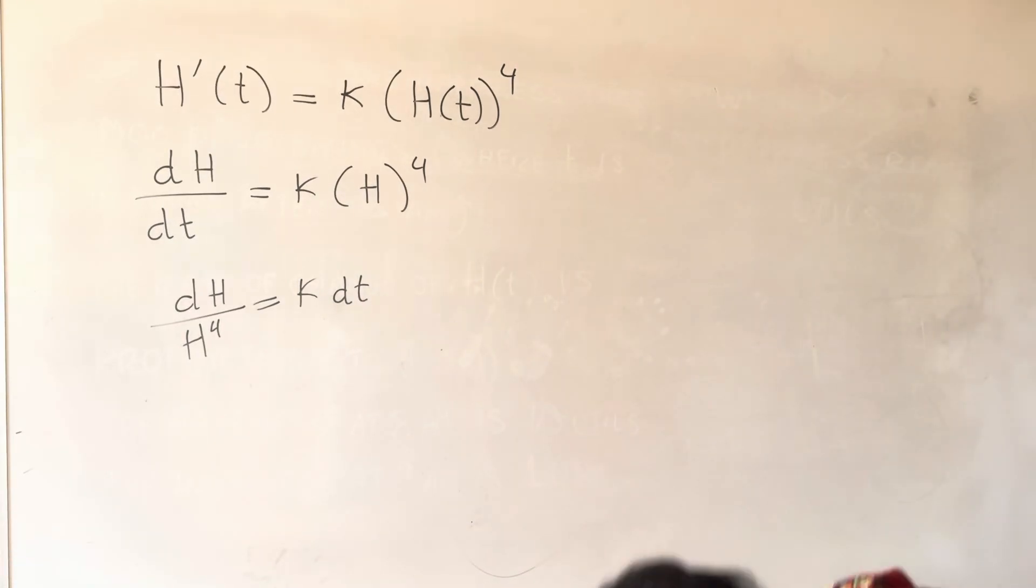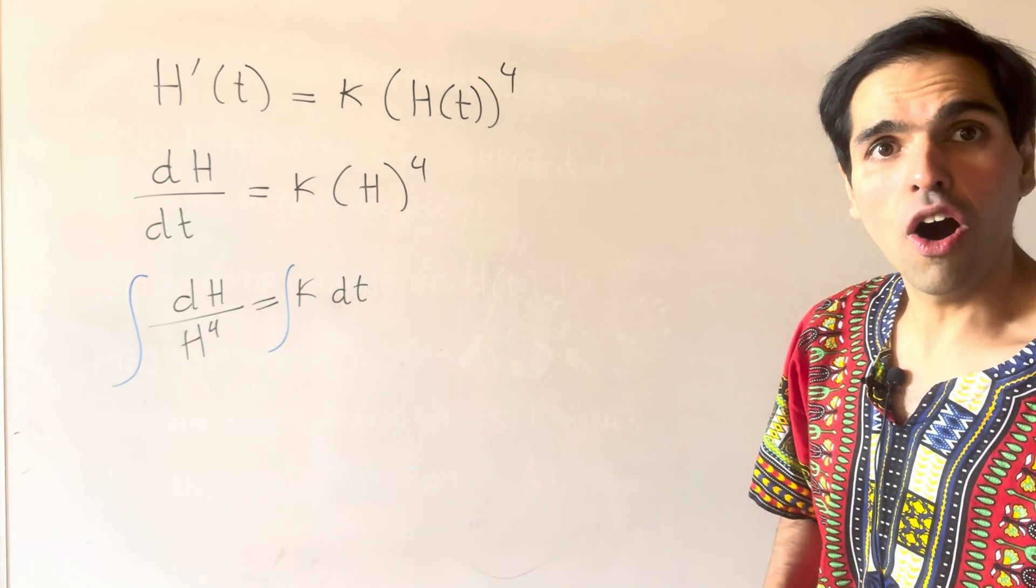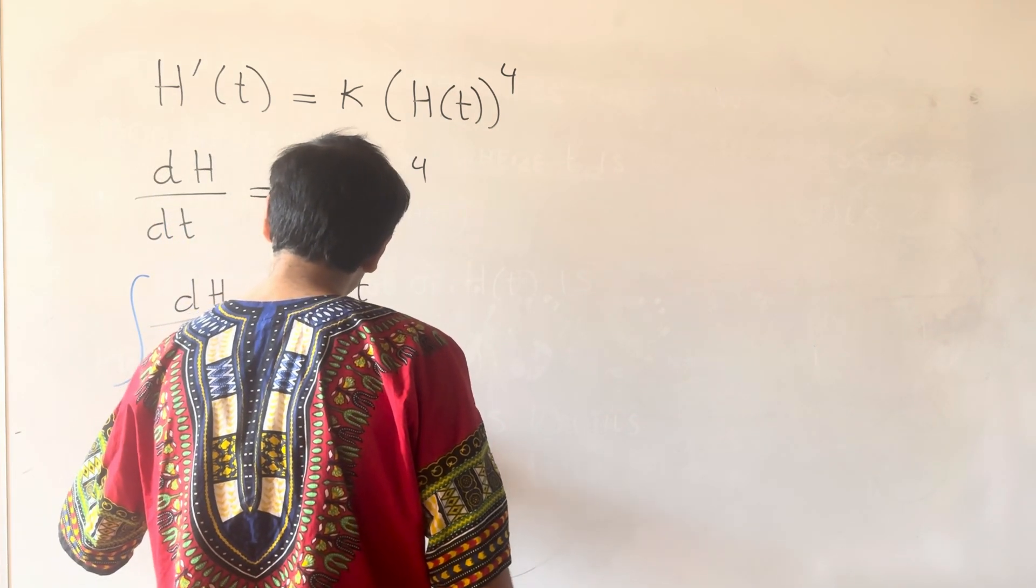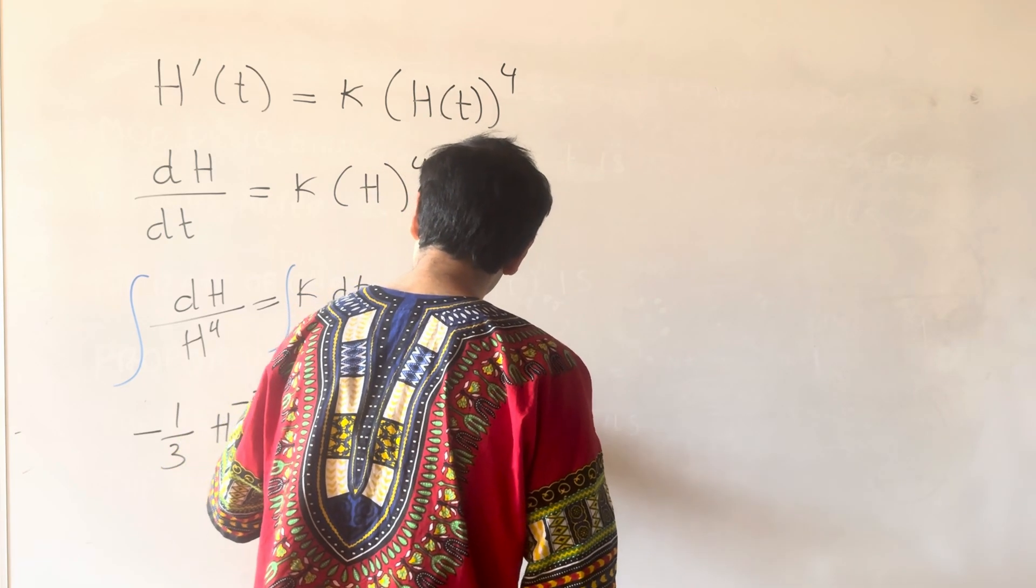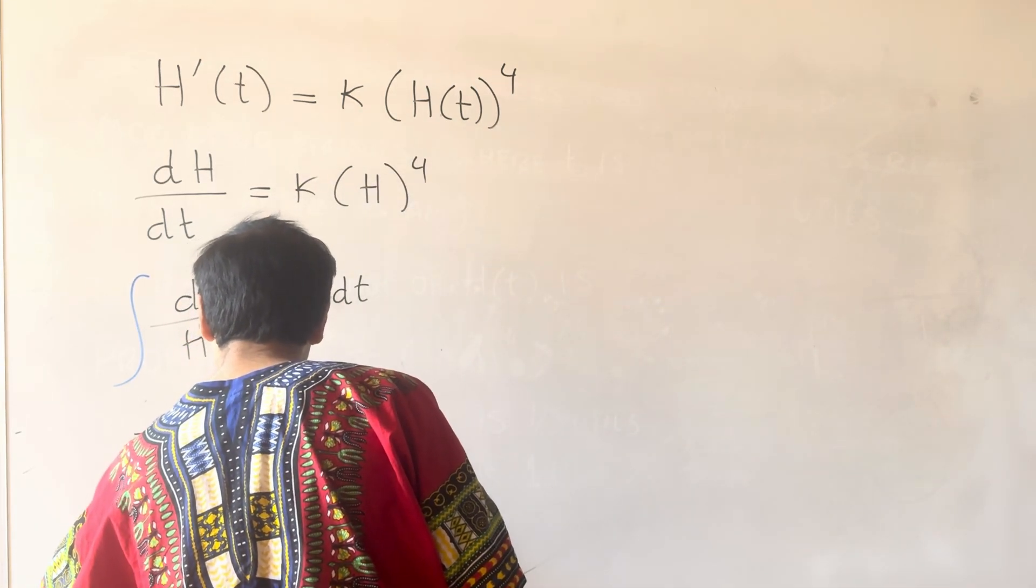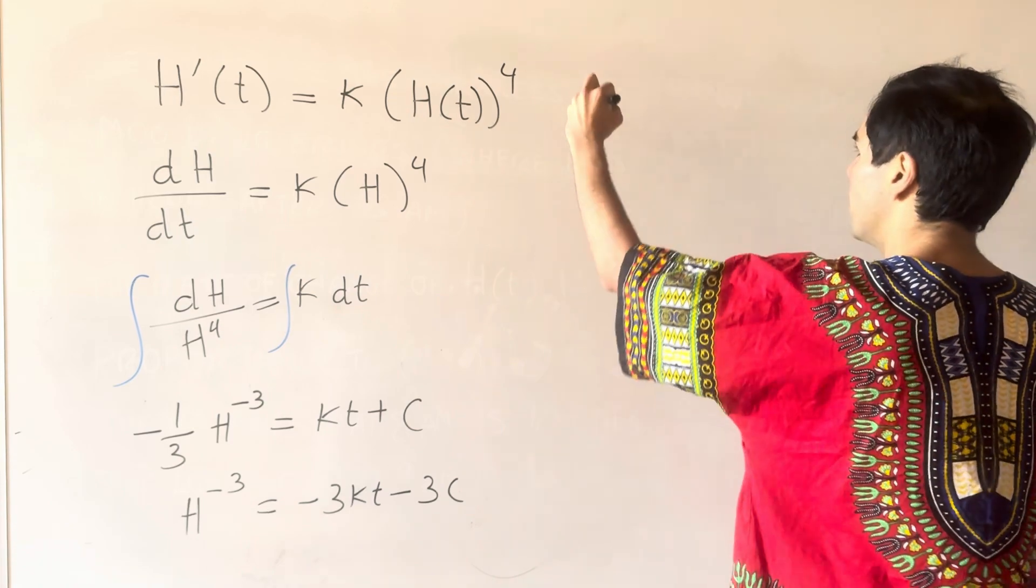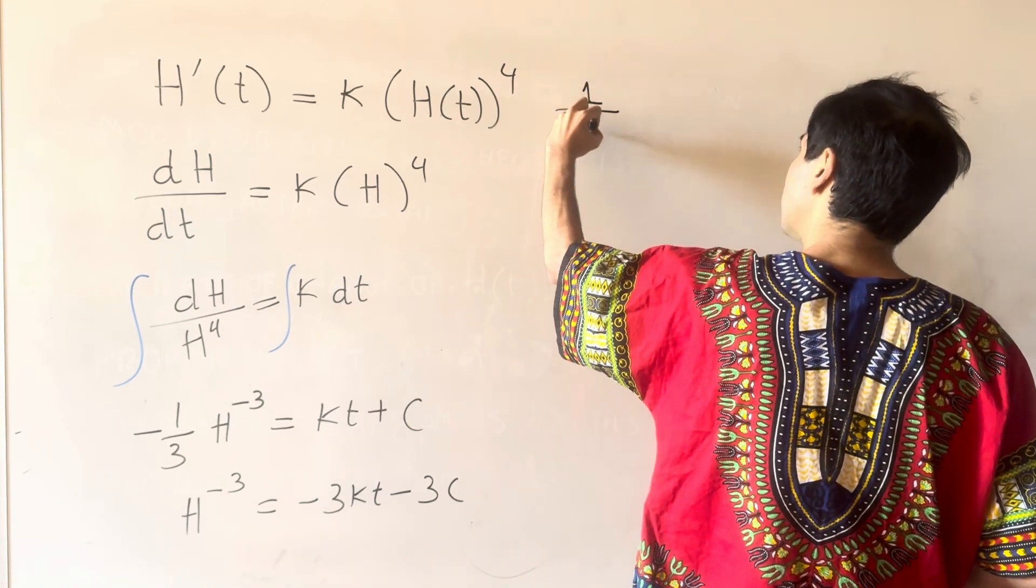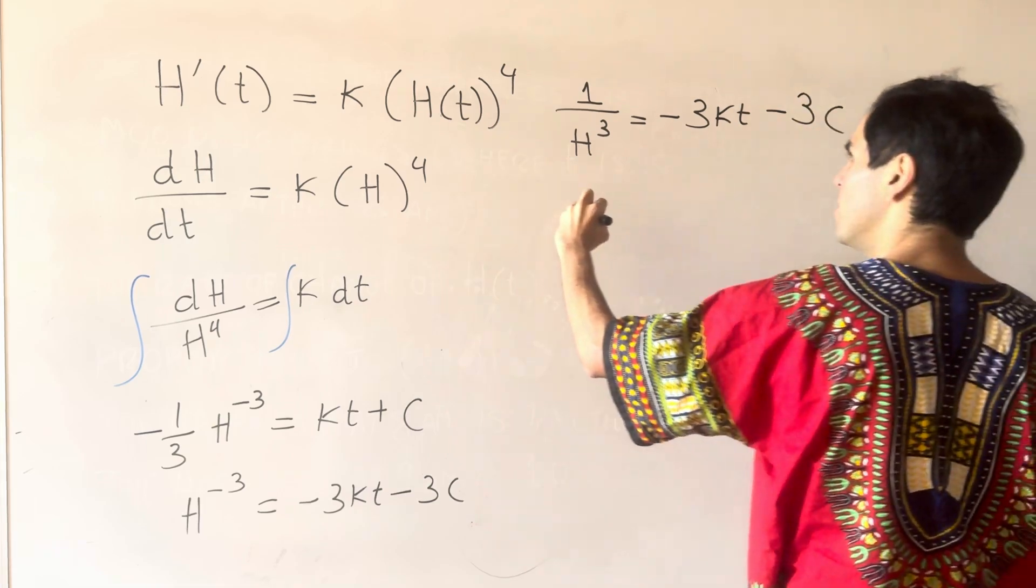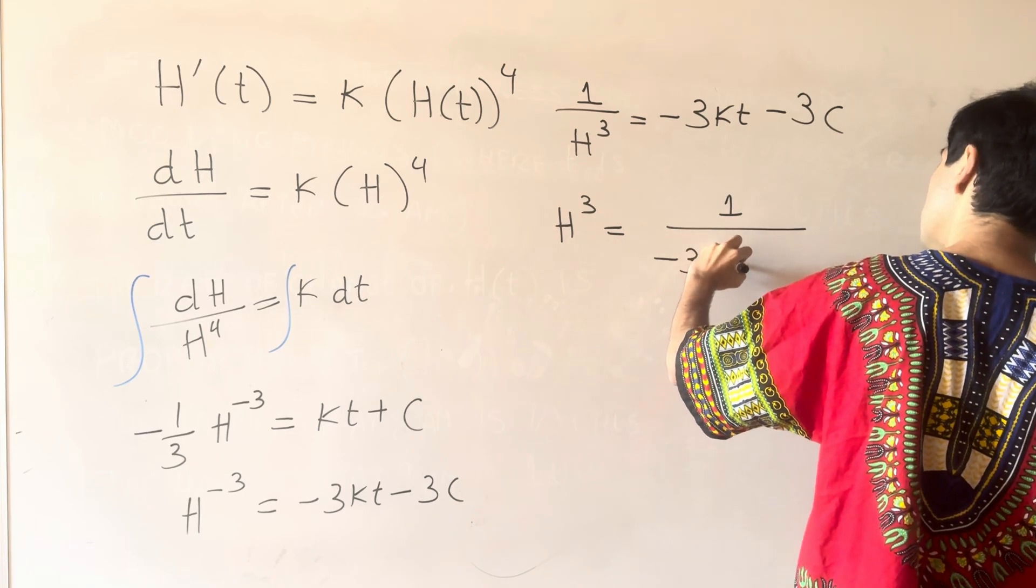Okay, and now what we can do, we can integrate this, so integral of that is integral of that. So an antiderivative of 1 over H to the fourth is, I believe, minus one-third H to the minus 3, and that is K dT plus a constant. And so multiply by minus 3, so H to the minus 3 is minus 3K dT minus 3C.